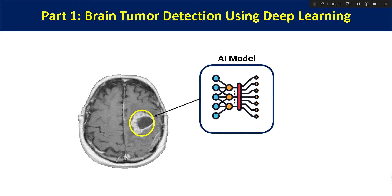Hello everyone, welcome to our channel, Chris Devanar. This is a video of another project — brain tumor detection using a deep learning approach. In this project we will be using brain MRI images for detecting three different types of tumors. We will be building a multi-class classification deep learning model, classifying three different types of tumors plus one normal brain class.